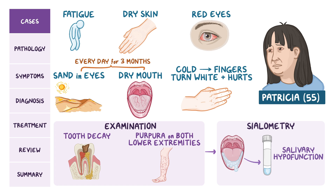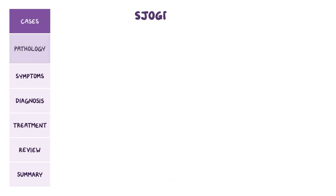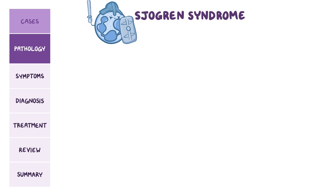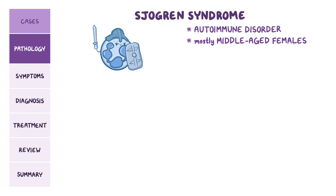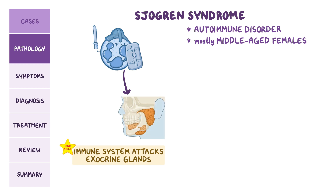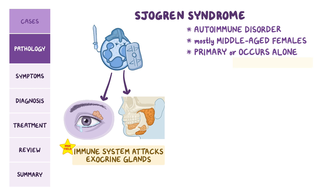Patricia's clinical picture is suggestive of Sjogren's syndrome. Sjogren's syndrome is an autoimmune disorder that mostly affects middle-aged females. The high-yield concept here is that the immune system attacks various exocrine glands, especially salivary and lacrimal glands. If Sjogren's syndrome is primary or occurs alone, it's called Sica syndrome.